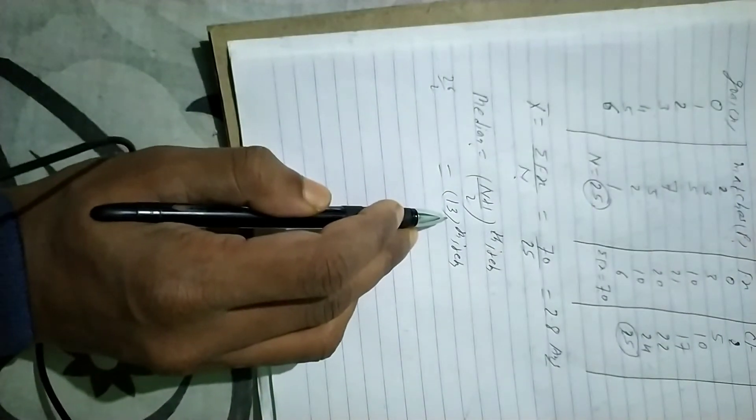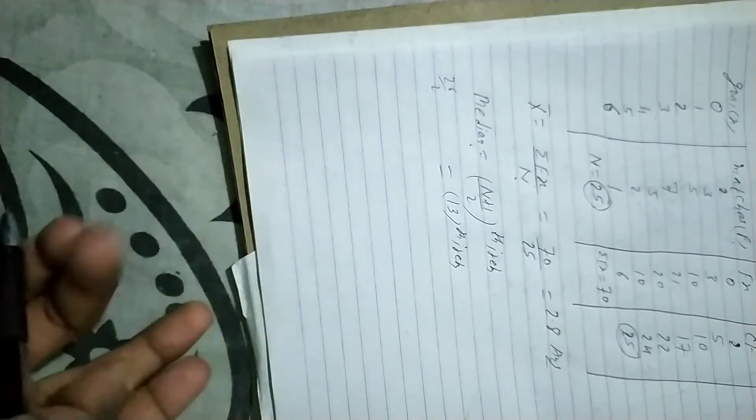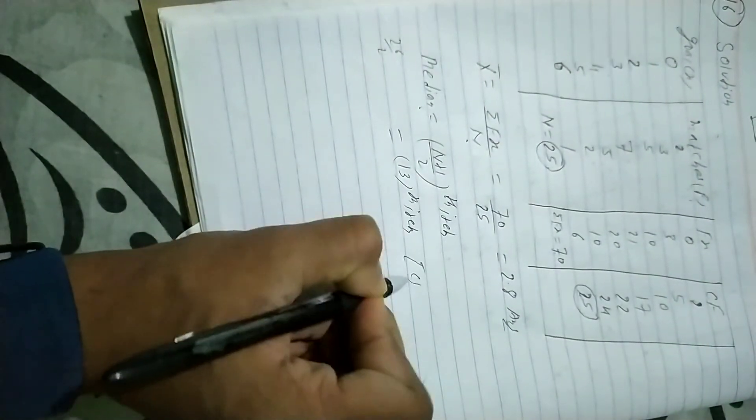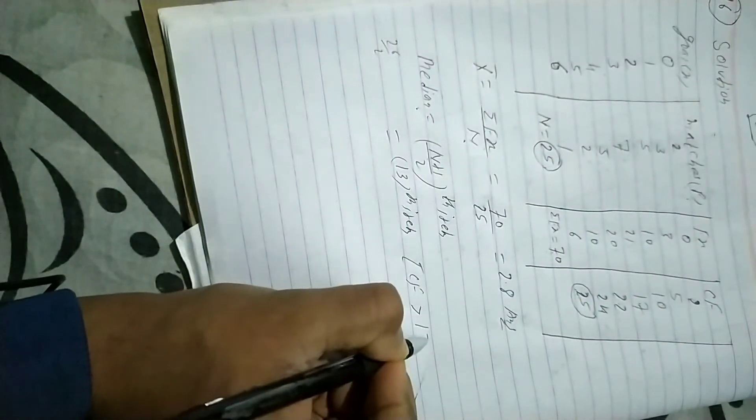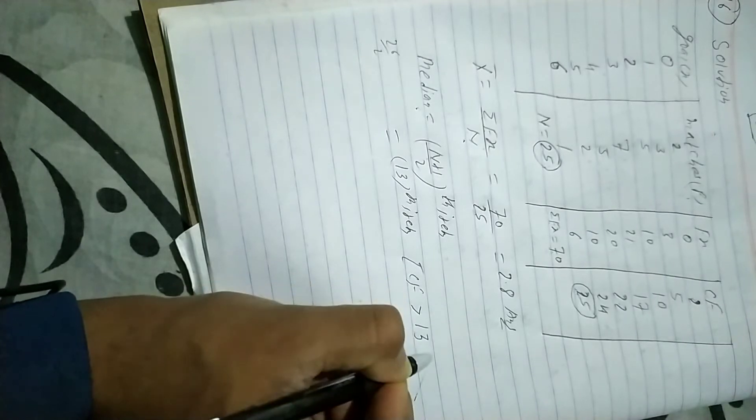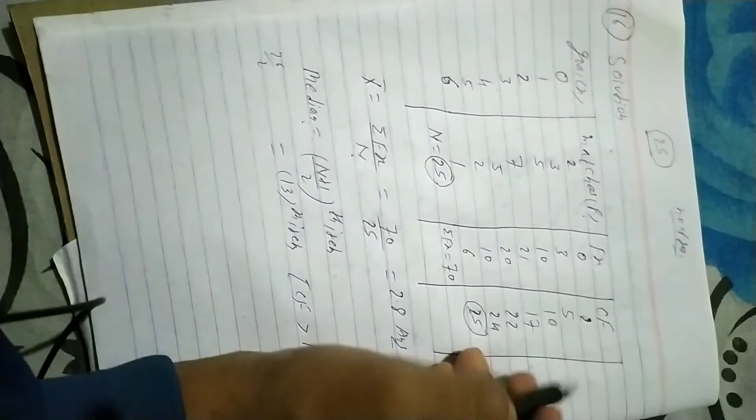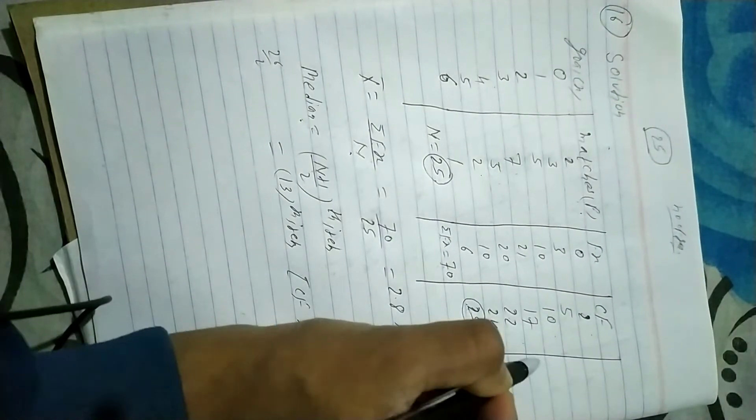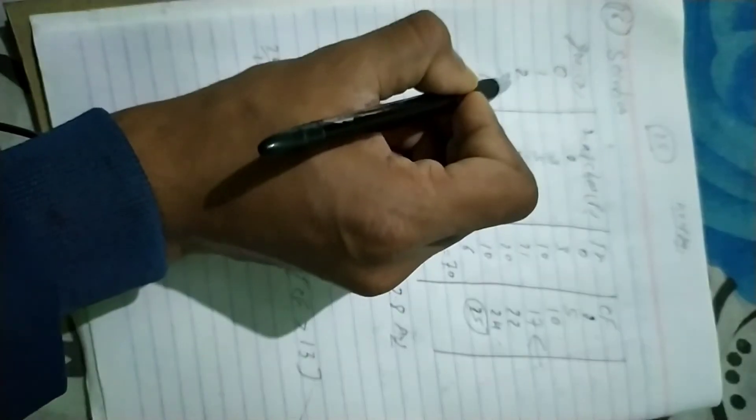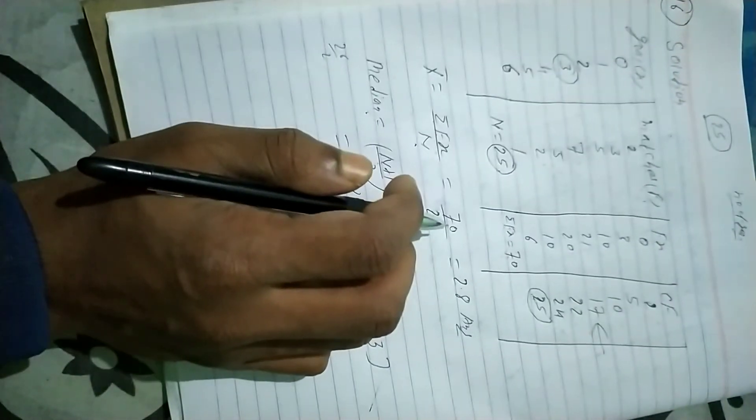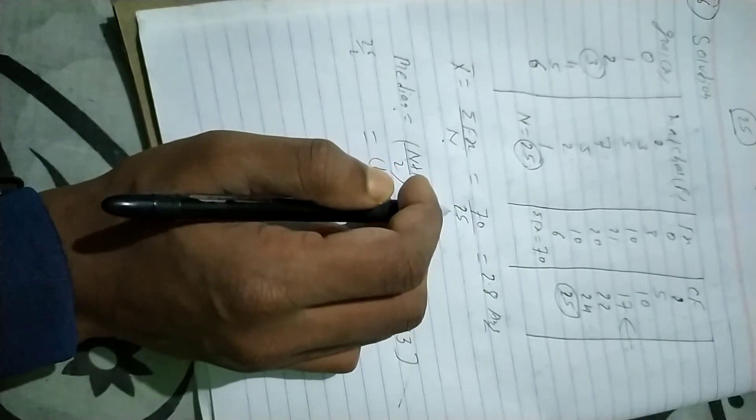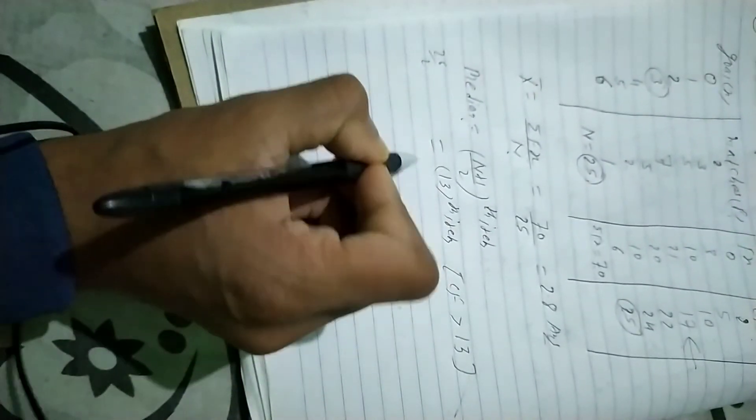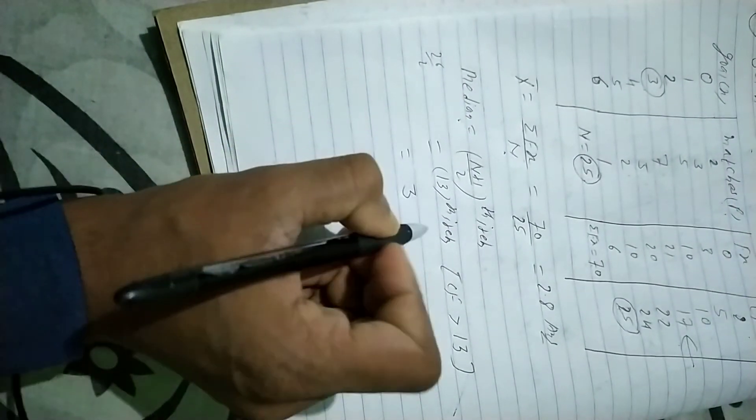The 13th item falls where the cumulative frequency is just greater than 13. That's 17. The corresponding x value where CF equals 17 is 3. So the median is 3.